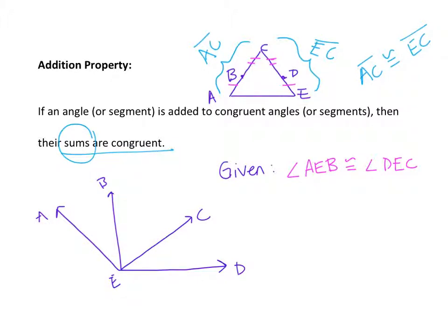We had to be adding congruent segments. So AB plus BC equals ED plus DC. You can see that we're adding the same length of segments for the sums to be equal.